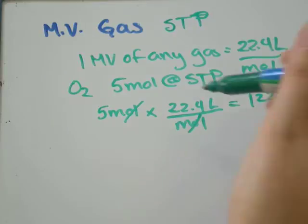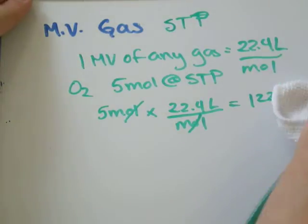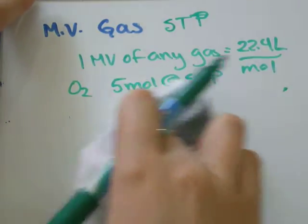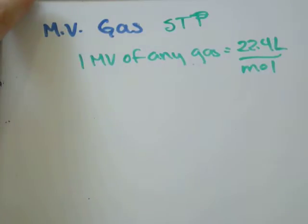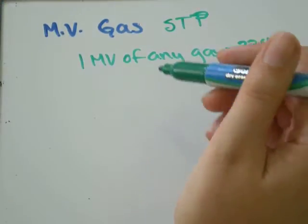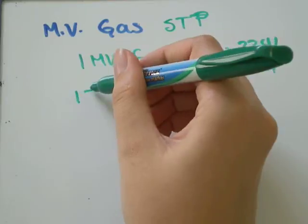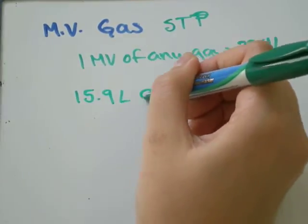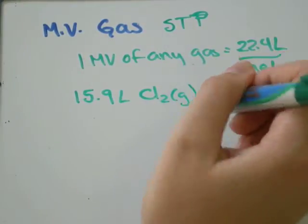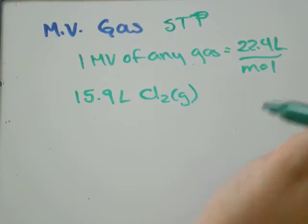Let's do another example. This time we've got chlorine gas, and we are asked, what is the mass of 15.9 liters of chlorine gas?